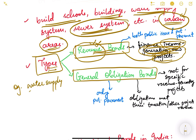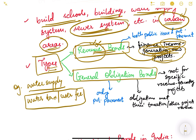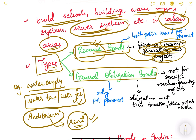For example, if a municipality is developing a new water supply system and people pay water tax or user fees to the municipality, it will generate revenue — making it a revenue-generating activity. Another example is a municipality constructing an auditorium which can be rented out to the public or institutions, and this rent becomes income for the municipality. These are revenue bonds — issued to finance new income-generating projects.